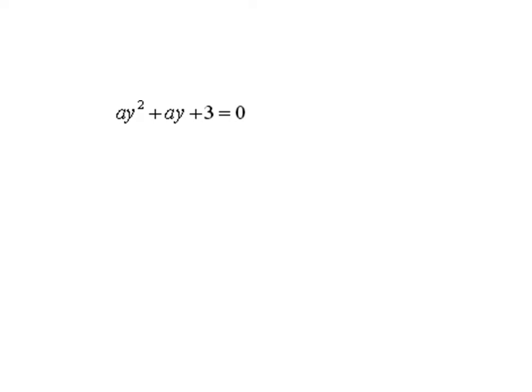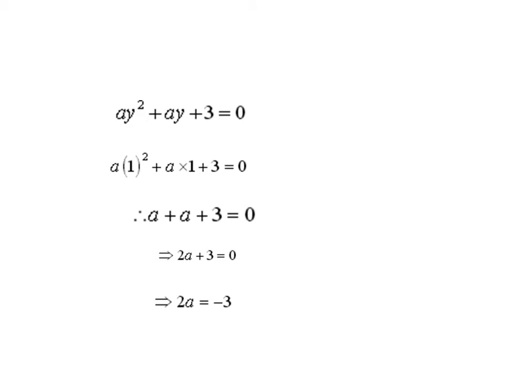In the equation ay² + ay + 3 = 0, putting y = 1, it becomes a(1)² + a(1) + 3 = 0, which gives a + a + 3 = 0. Adding a + a gives 2a + 3 = 0.